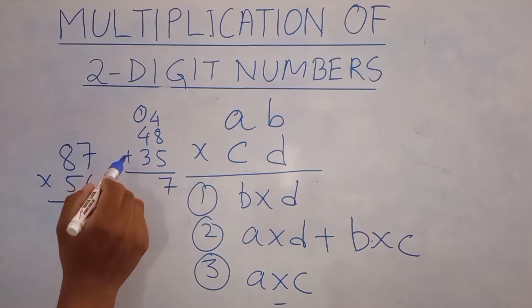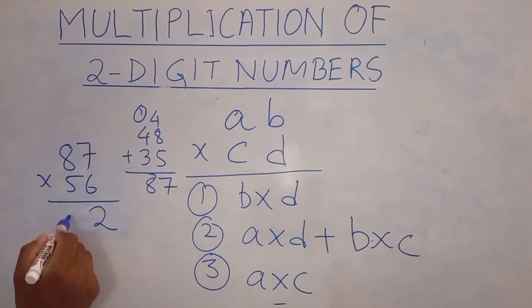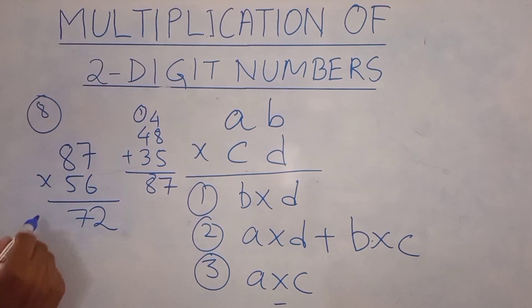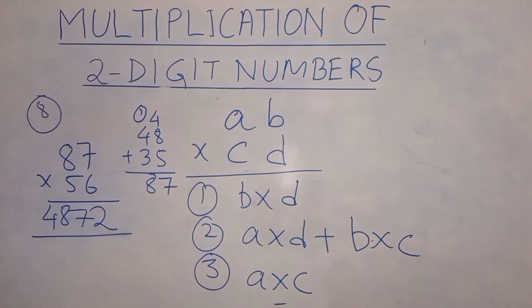And 1 plus 4 plus 3 gives you 8. So we'll write the 7 here and take the 8 here. And lastly 8 into 5 is 40 and 40 plus 8 gives you 48. So your answer is